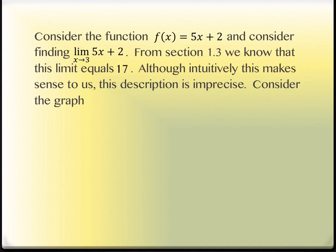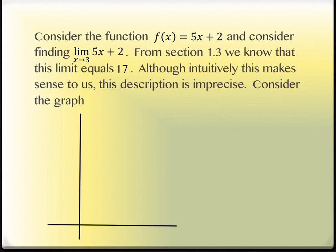Intuitively, we look at it and say: it gets infinitely close to 17 on the y value. But that's not a very precise definition as far as mathematics is concerned. So we're going to give it a more precise definition. I'll sketch the graph — it's steep because the slope is 5, it's a line, and it crosses above the x-axis because the y-intercept is 2. The limit is at x = 3, and the y value we're approaching is 17.